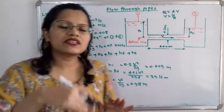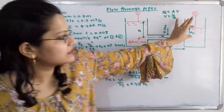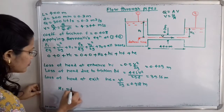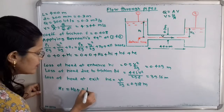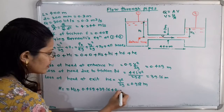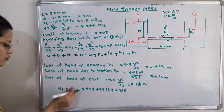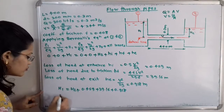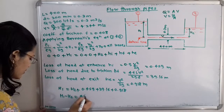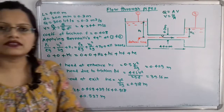We now calculate the difference in elevation. Since H1 is greater than H2, we write: H1 = H2 + 0.459 + 39.16 + 0.918. Shifting H2 to the left-hand side: H1 minus H2 = 0.459 + 39.16 + 0.918 = 40.537 m. This is the answer — the difference in elevation between the water surfaces in the two tanks is 40.537 meters.